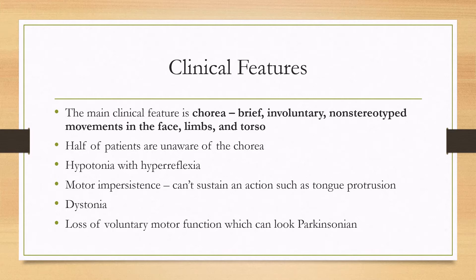Other features can include hypotonia with hyperreflexia, as well as motor impersistence, meaning they cannot sustain an action for a long period of time, such as tongue protrusion. There can also be dystonia, as well as a progressive loss of voluntary motor function which eventually can look parkinsonian — akinetic rigidity.